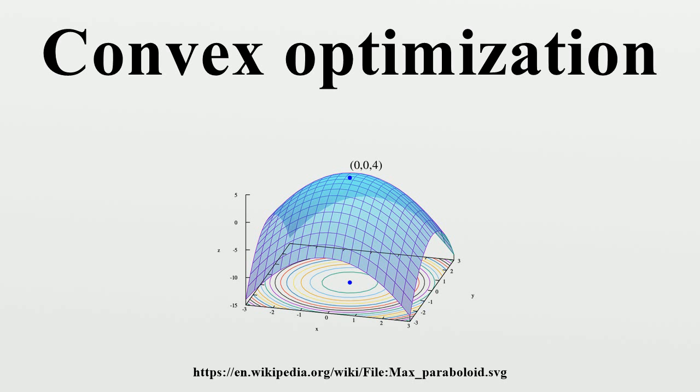Many optimization problems can be reformulated as convex minimization problems. For example, the problem of maximizing a concave function f can be reformulated equivalently as a problem of minimizing the function negative f, which is convex.